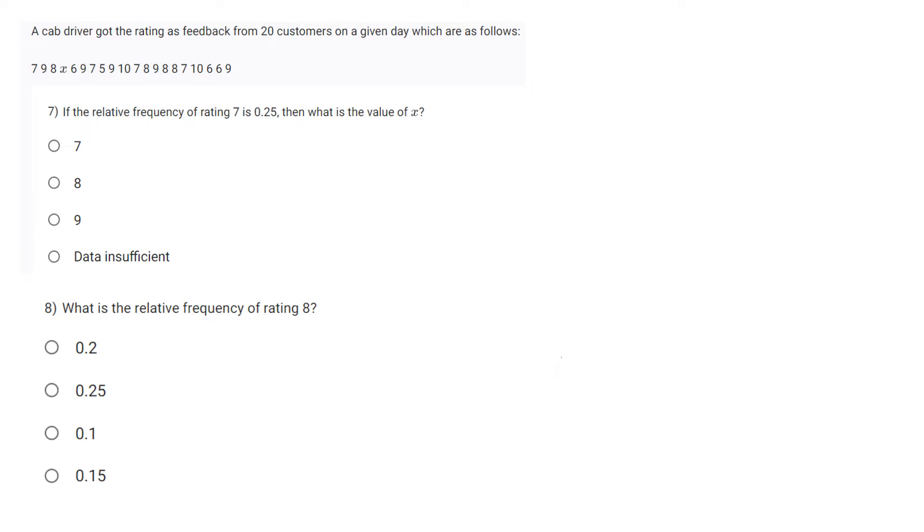A cab driver got the rating as feedback from 20 customers on a given day which are as follows. If the relative frequency of 7 is 0.25, then what is the value of x? We have to find x. The relative frequency of 7 is 0.25 means if the total frequency is 1 then the relative frequency is 0.25. So if the total frequency is 20 then the relative frequency will be 20 into 0.25.